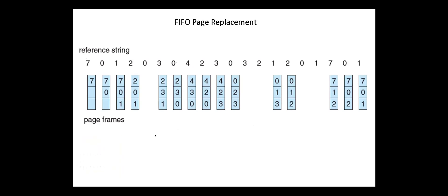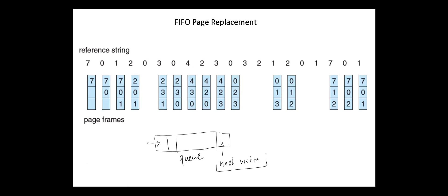The first-in-first-out page replacement can be implemented using a queue. New pages are brought in and they are added to the tail of the queue, and the page at the head of the queue is the next victim. Although first-in-first-out is simple and easy, it's not always optimal or even efficient.